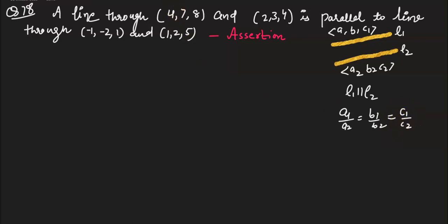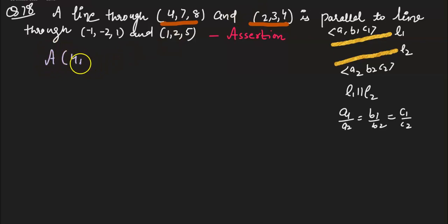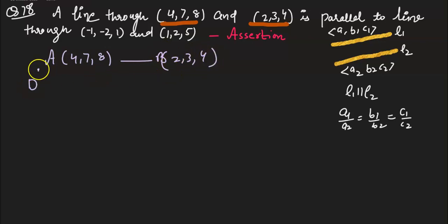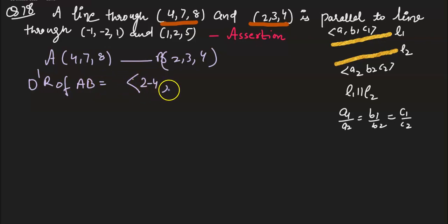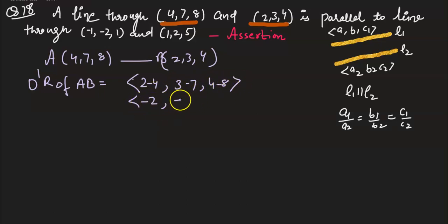We have to find the direction ratios because we have two points. Let A = (4,7,8) and B = (2,3,4). Direction ratios of AB will be: 2 minus 4, 3 minus 7, 4 minus 8 — so it becomes minus 2, minus 4, minus 4.